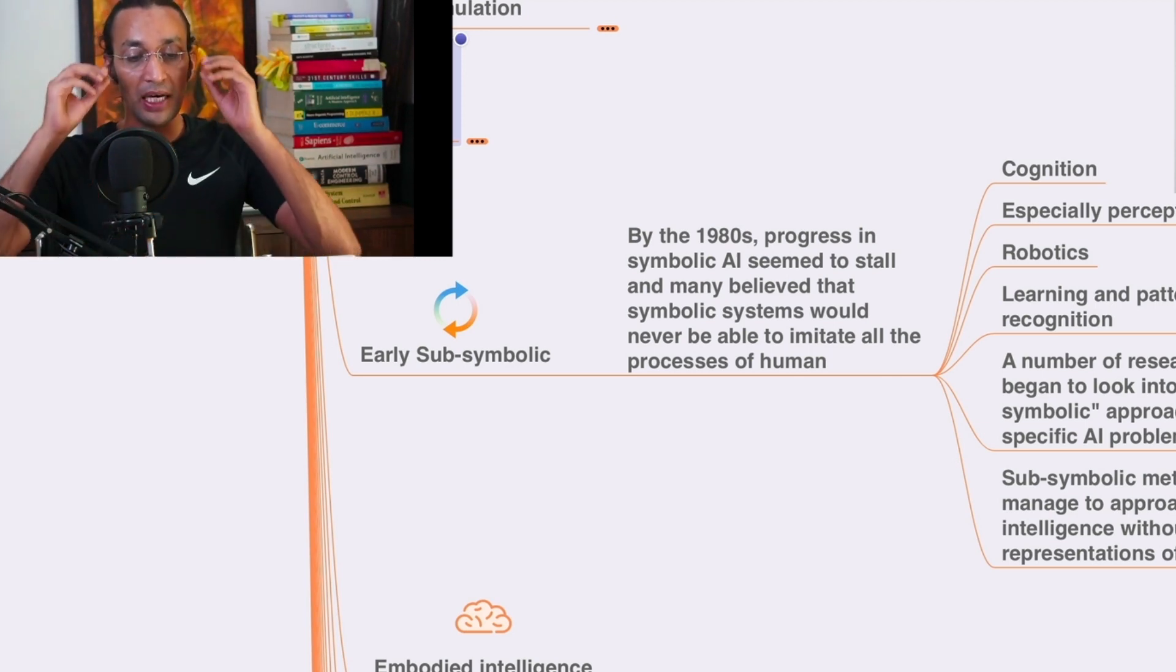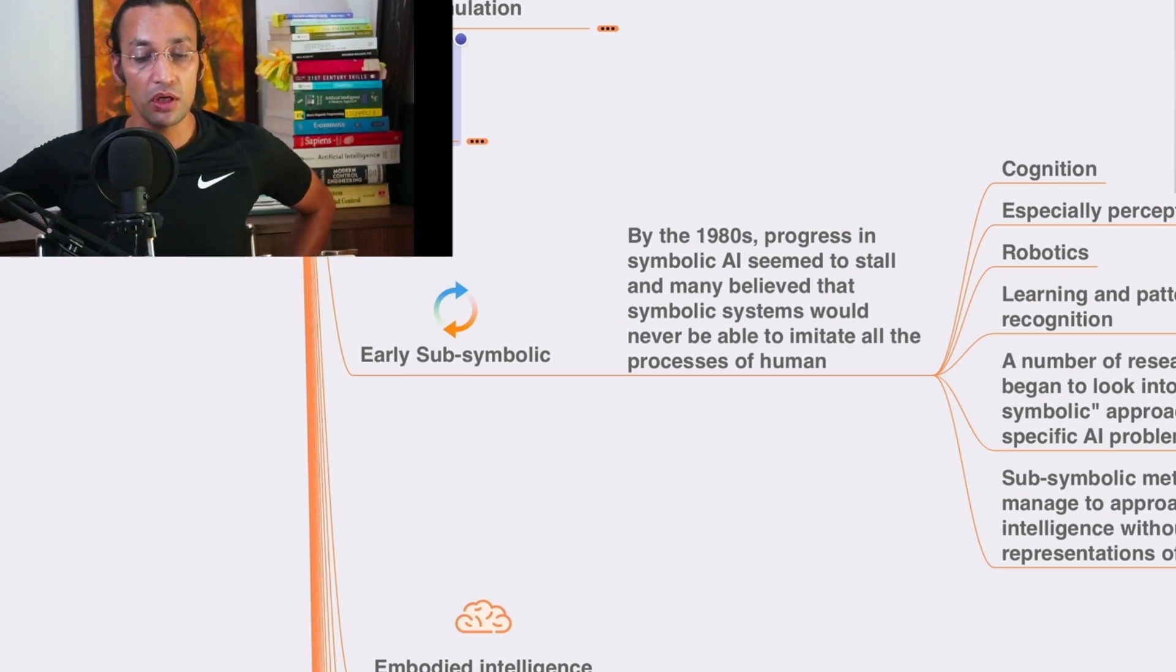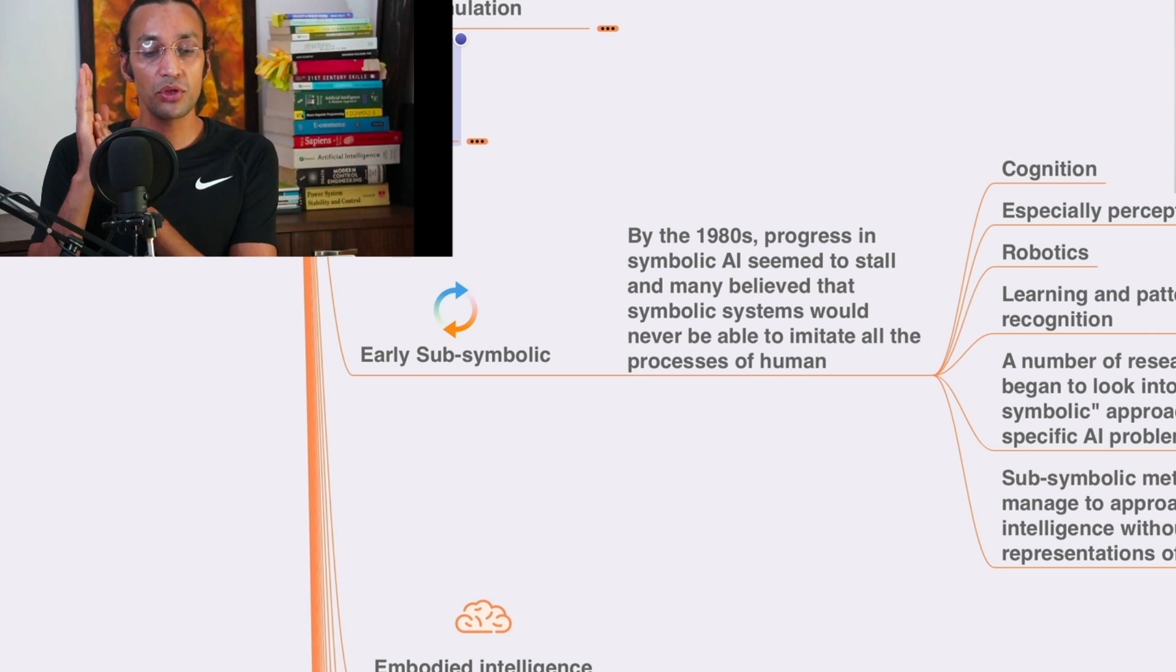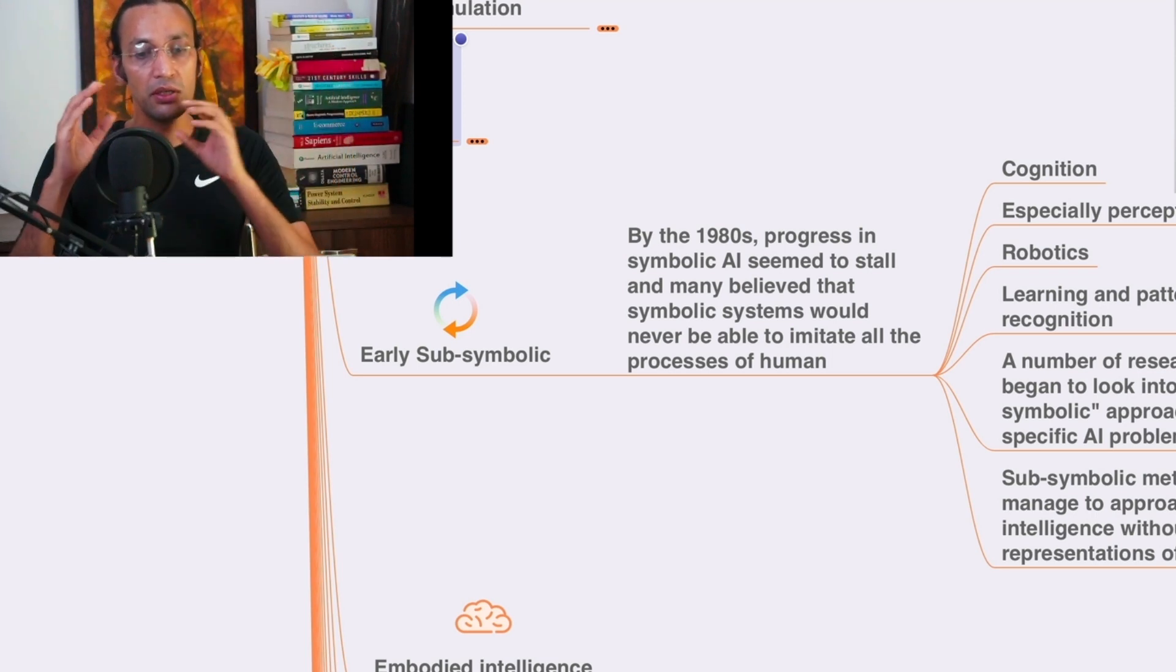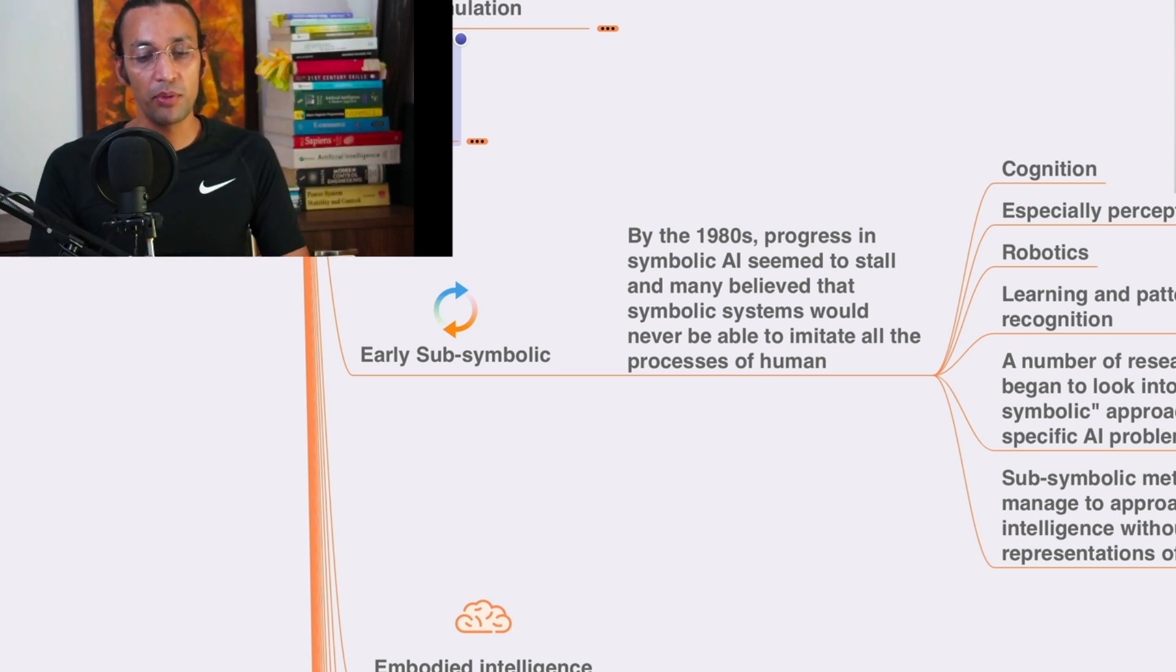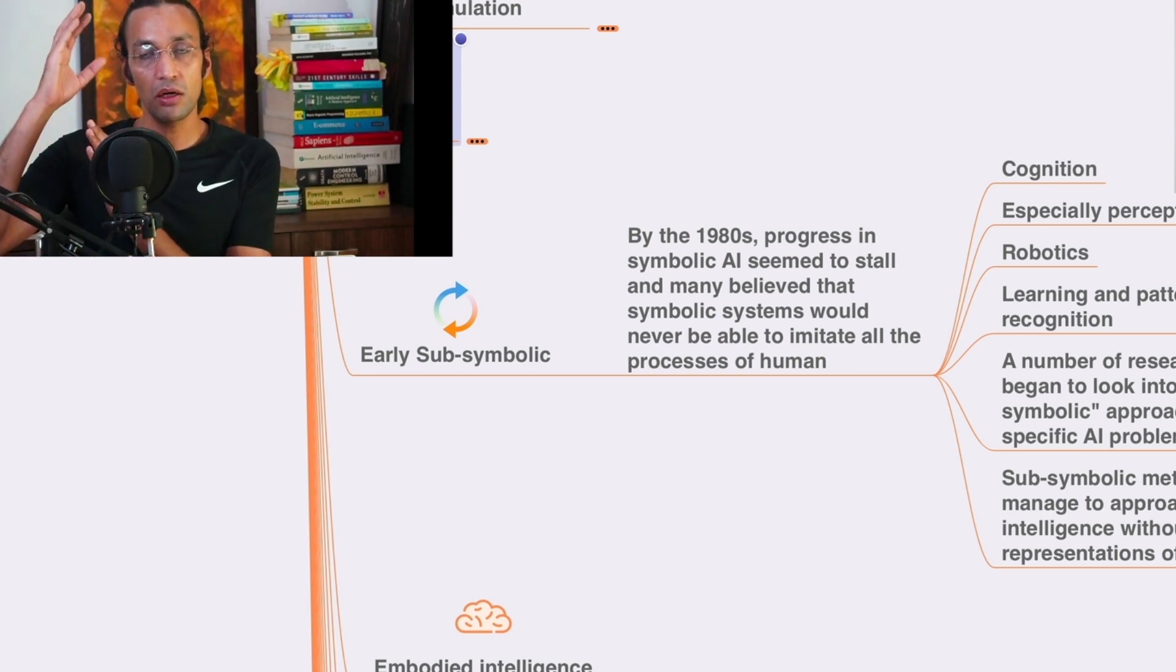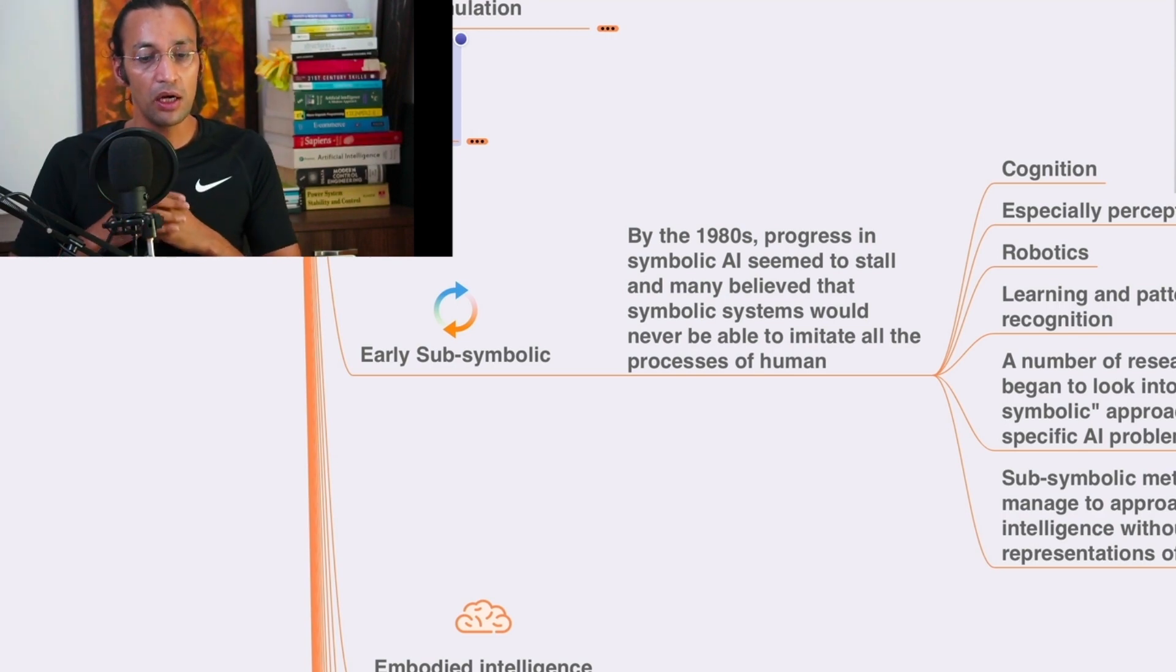So at that point of time researchers, they focused on and started looking at sub-symbolic approaches to specific AI problems, like from general artificial intelligence to specific. This sub-symbolic approach was like representation, specific problem solving, as they started working on that area.